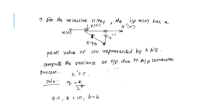Now let us apply this in a problem. For a recursive filter, the input X(n) has a peak value of 10 volts represented by 6 bits. We need to compute the variance of output due to A to D conversion. No representation type is specified, so we will consider two's complement.